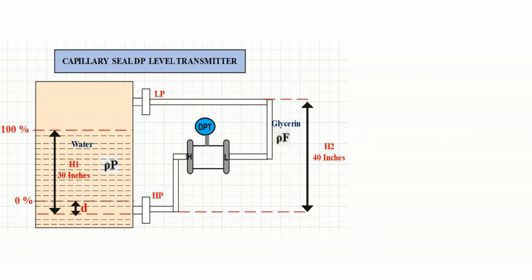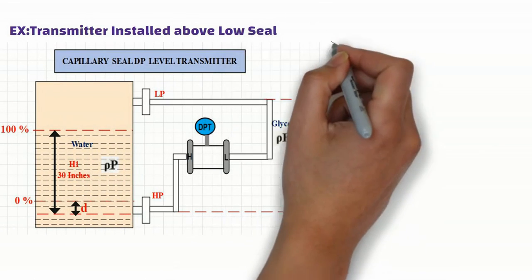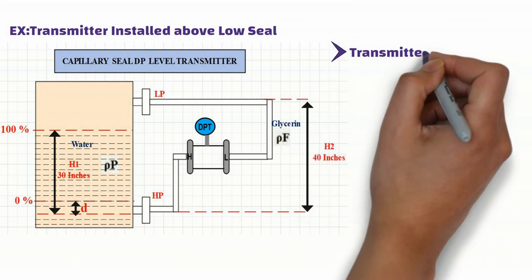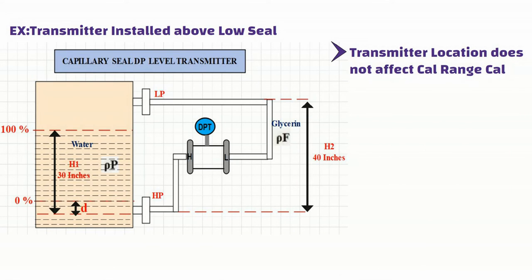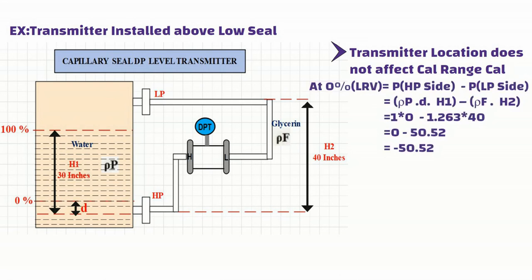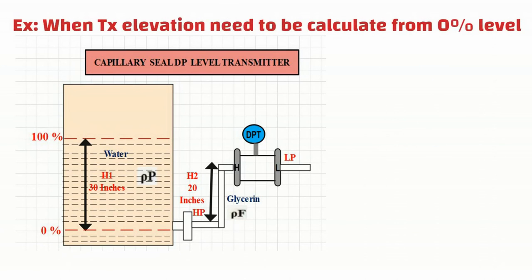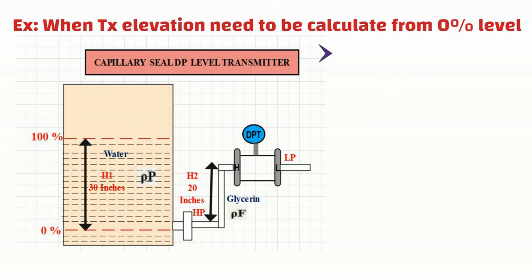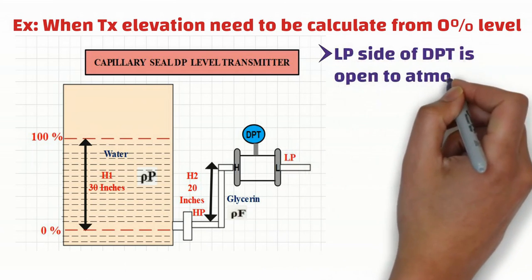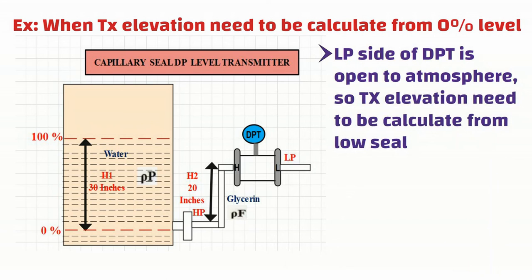As you can see, this is the example when the DP transmitter is installed above the low seal, and the 0% level is also above the low seal. However, as discussed earlier, transmitter location does not affect calibration range calculation when dual seals are used, so the LRV and URV remain the same as the previous example. However, the transmitter mounting elevation must be considered when one diaphragm is connected to the tank and the other diaphragm is open to atmosphere. In that case, we need to calculate the elevation of the transmitter from the low seal when calculating the calibration range.